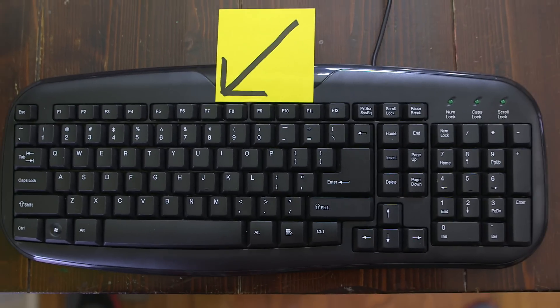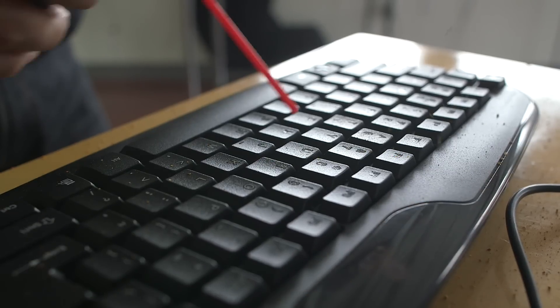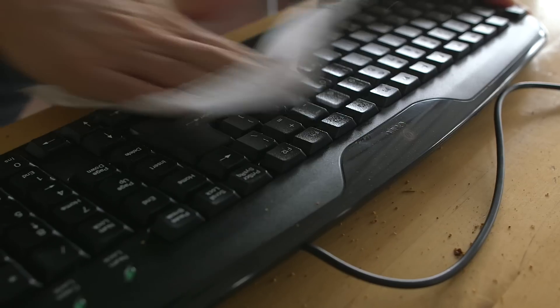Germy place number two, your computer keyboard. Your computer keyboard is one of the dirtiest places in your entire house. It often has ten times the number of bacteria that your toilet has because it's never cleaned. Vacuum out crumbs, spray with pressurized air, and wipe with a cleaning solution.